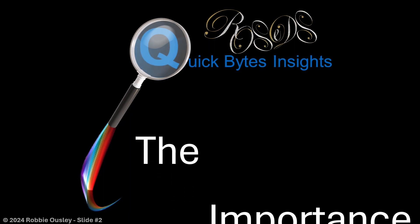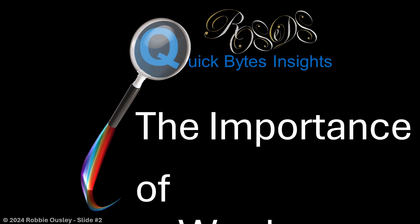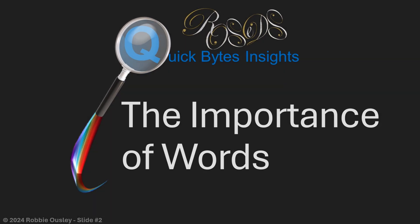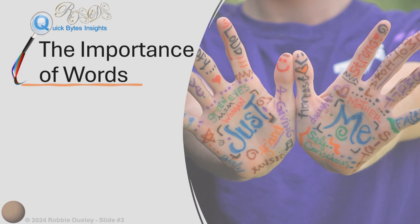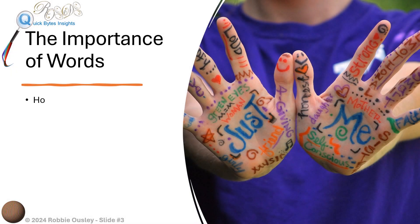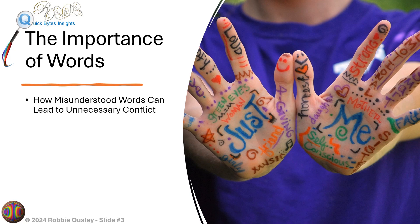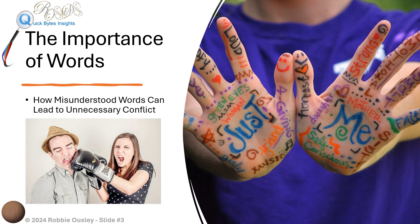The importance of words: how misunderstandings about words can lead to unnecessary conflict. Welcome to Rosettes — the Robbie Usley Super Dynamic Social Stratosphere Model.